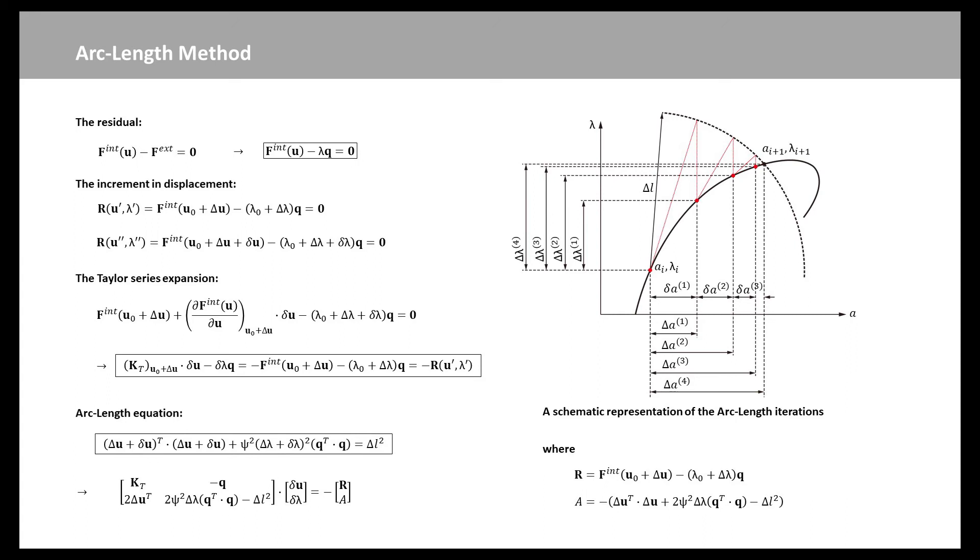The supplementary equation that completes the system is called the arc-length equation. Psi and delta L are user-defined parameters. When Psi is equal to 1, the method is also called the spherical arc-length method. Collecting up the two equations, we can write the system of equations we need to solve in a much more compact form.